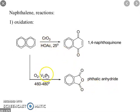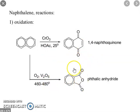So we have two reagents with two products. Chromium oxide gives 1,4-naphthoquinone, and vanadium pentoxide gives phthalic anhydride. Friends, just remember these two different oxidation conditions of naphthalene.